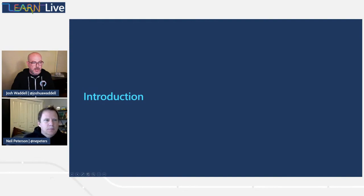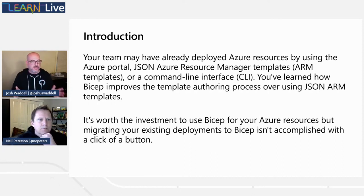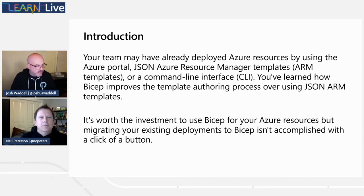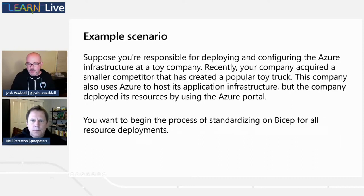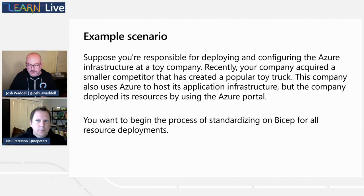Our scenario: you are the Azure infrastructure admin responsible for configuring Azure infrastructure for your toy company. You've learned how Bicep improves your overall template authoring process over JSON ARM templates. Now we're talking about migrating those existing templates from ARM over to Bicep. Recently, your company acquired a smaller competitor that uses Azure for its application infrastructure, but that previous company did all of their deployments manually inside the portal.